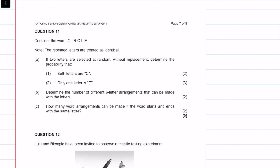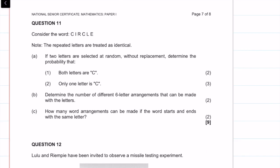What's up guys and welcome to this online tutorial. We are going over question 11, which has to do with probability of the 2018 math exam. So basically it says, consider the word circle.